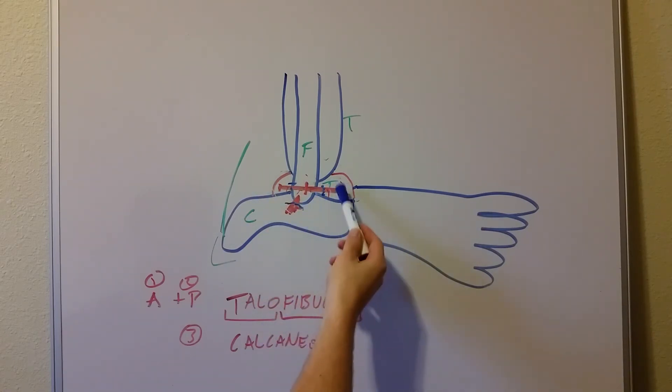One, one, two, one, two, three. And that is the grade one, grade two, grade three. And there you have an easy way to remember ankle sprains and their grading classification.